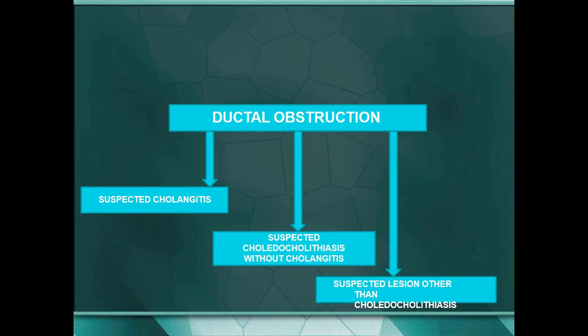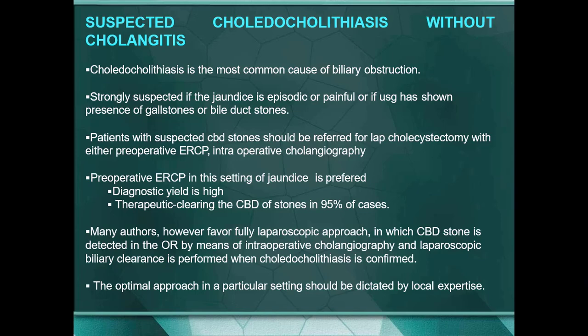Ductal obstruction may be suspected cholangitis, suspected choledocholithiasis without cholangitis, or a suspected lesion other than choledocholithiasis. Choledocholithiasis is the most common cause of biliary obstruction. It is strongly suspected if jaundice is episodic or painful, or if ultrasound shows gallstones or bile duct stones. Patients with suspected CBD stones should be referred for laparoscopic cholecystectomy with either pre-operative ERCP or intraoperative cholangiography. Pre-operative ERCP in the setting of jaundice is preferred, with diagnostic yield high and therapeutic clearing of CBD stones in 95% of cases.